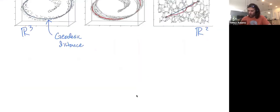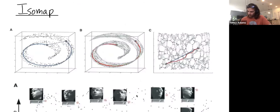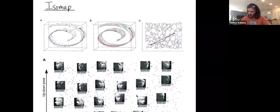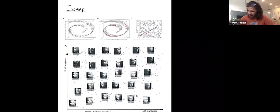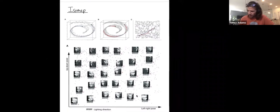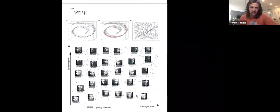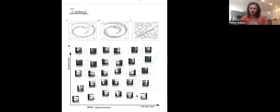All right, let me end with one example. I want to show ISOMAP applies to this dataset of images of a statue. So our dataset is very high dimensional, all these images.